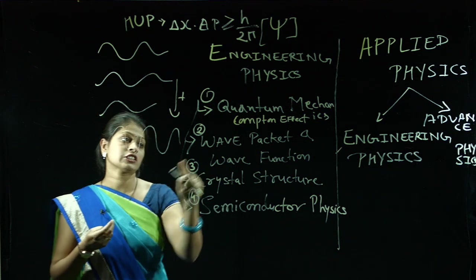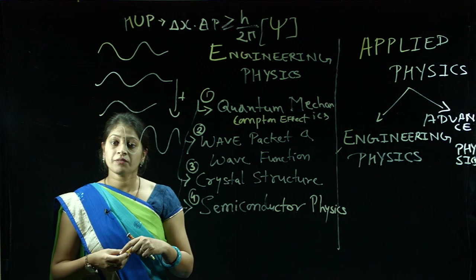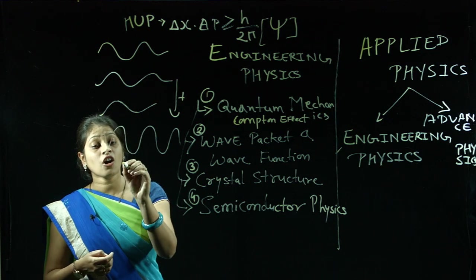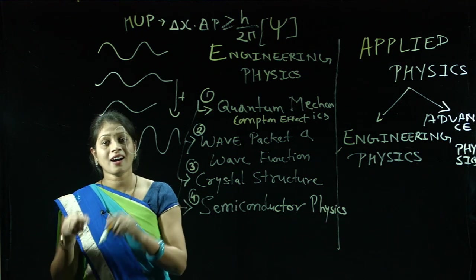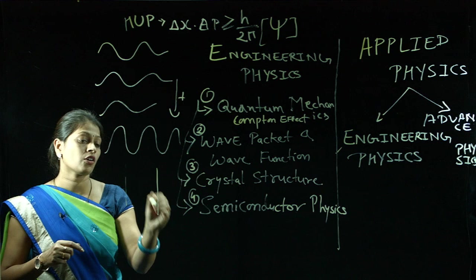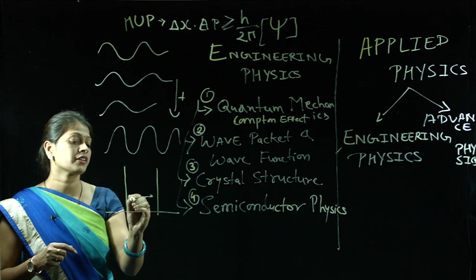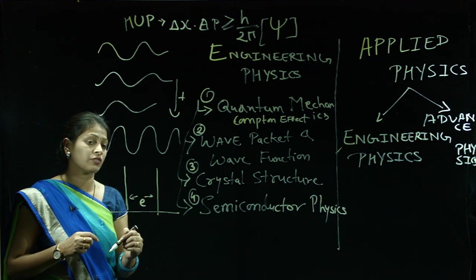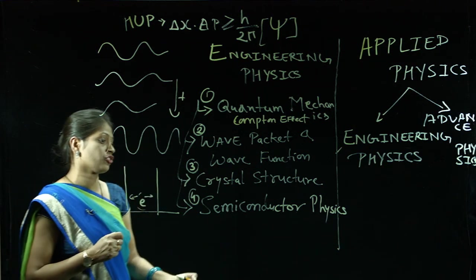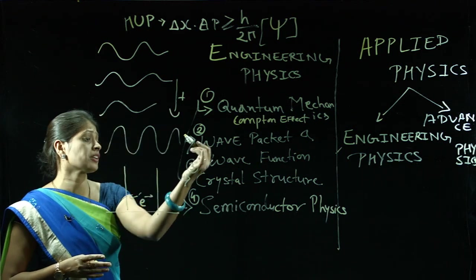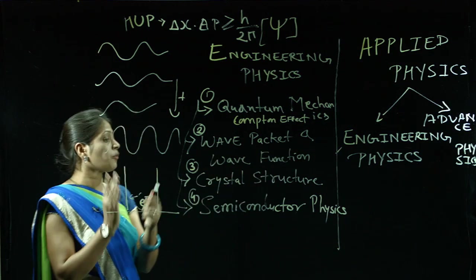The last topic in this unit is the potential well — the one-dimensional potential well — in which we will explain how an electron behaves when it is confined within a high-depth well, how it moves, how the wave equation is given, and what the energy of such an electron is if it is confined in a one-dimensional potential well. All these topics are included in our second unit: Wave Packet and Wave Function.